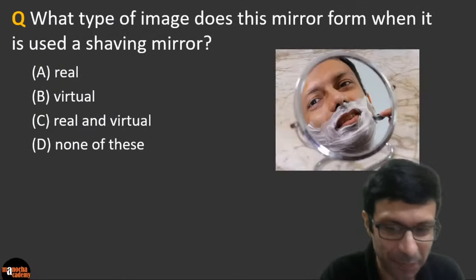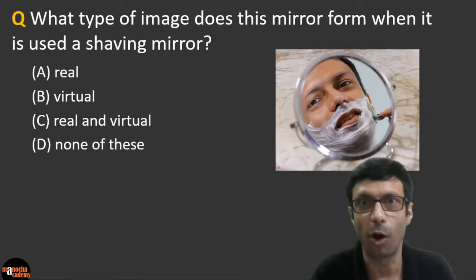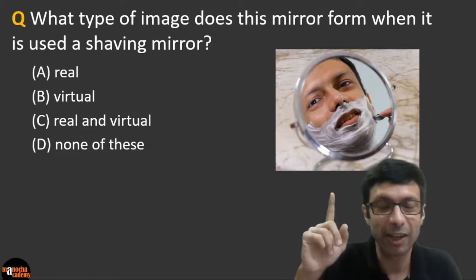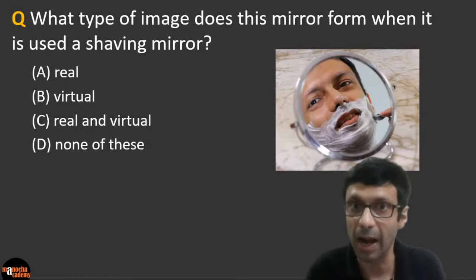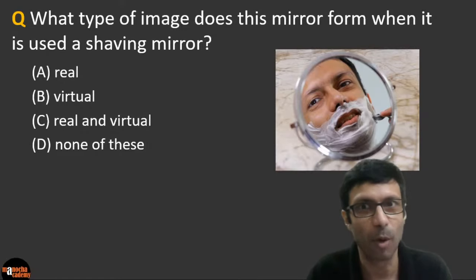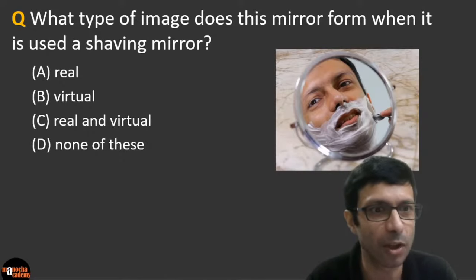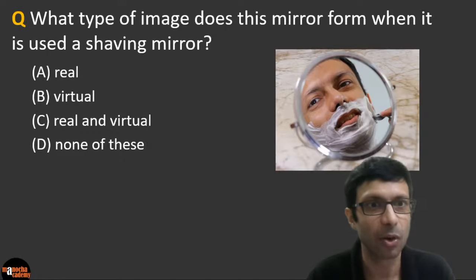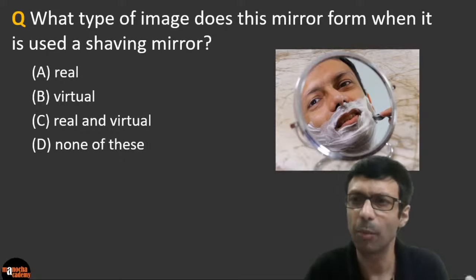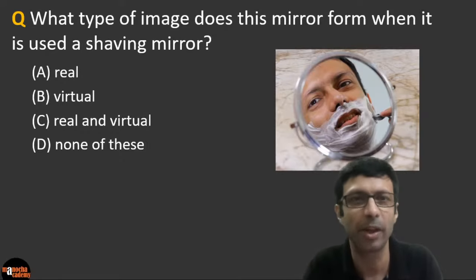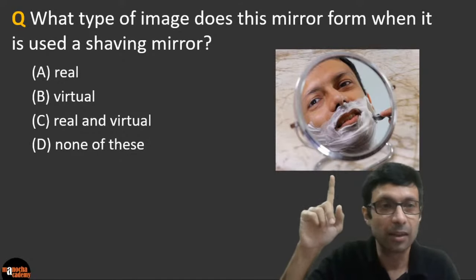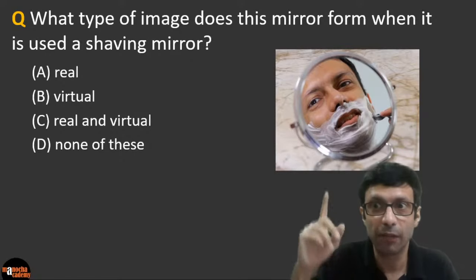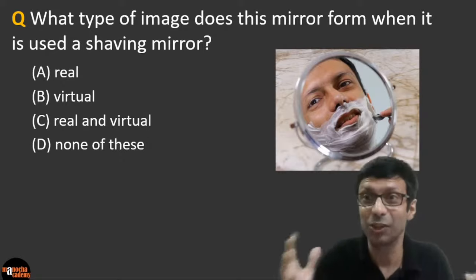Next question: what type of image does a shaving mirror form when used as a shaving mirror? Is it a real image, a virtual image, a real and virtual image, or none of these? A shaving mirror is a curved mirror — you can see that when shaving, you get a magnified image of your face, so it's easier to shave or apply makeup.